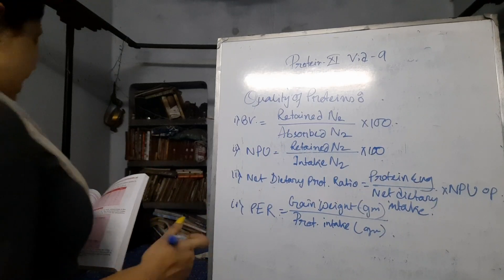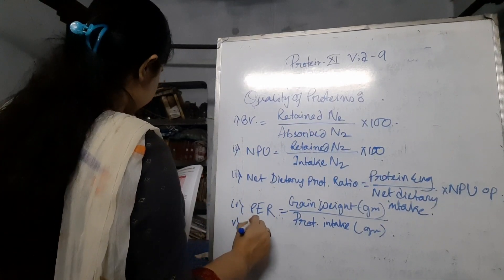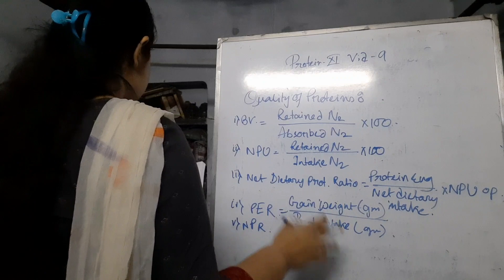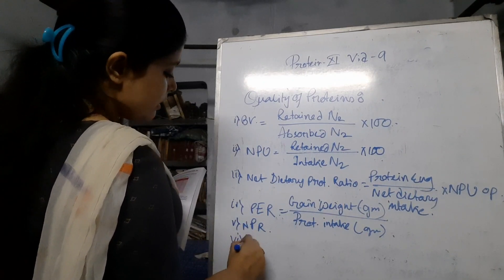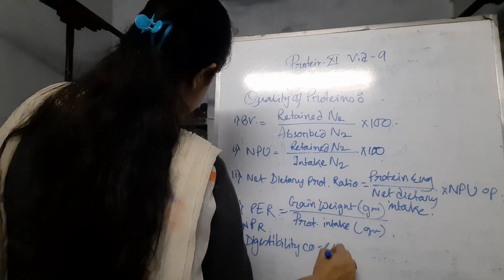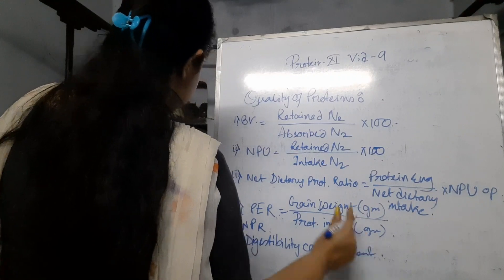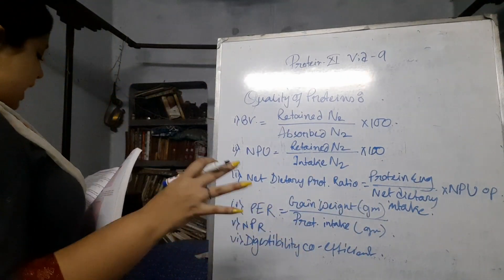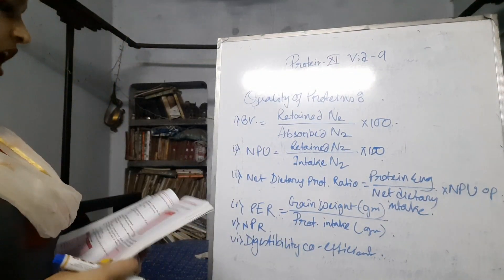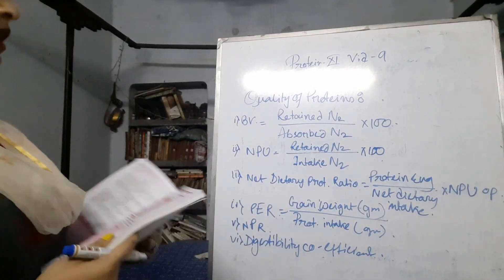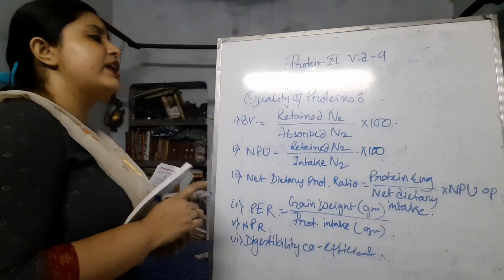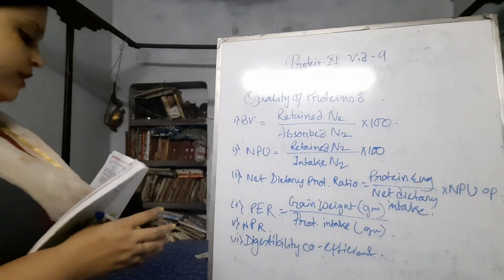The next is NPR. There are many terms. NPR is the modified part of the PER, so I am not going to write it in detail. Then, the digestibility coefficient also. It refers to the percentage of the ingested protein absorbed into the bloodstream after the process of digestion — how much amount can be absorbed after digestion. So these are the first part of finding out the quality of proteins.